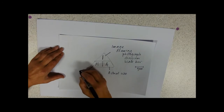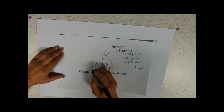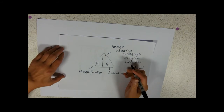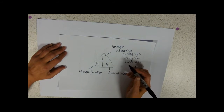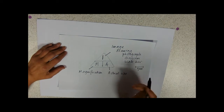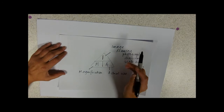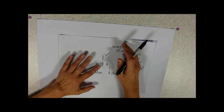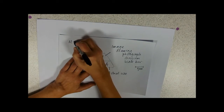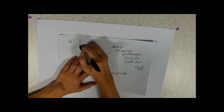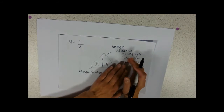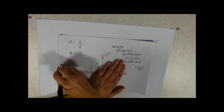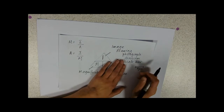N is magnification — how many times bigger something is. You're most likely to have to calculate magnification, which is image size over actual size. Or you may need to calculate actual size, which is image size over magnification.